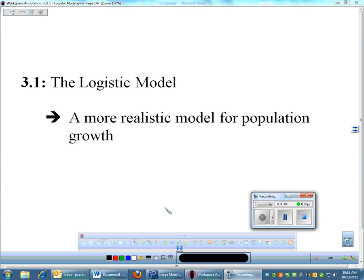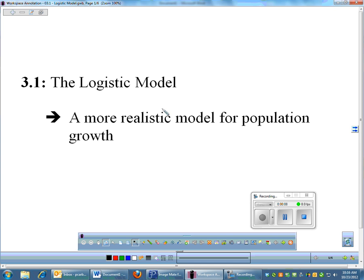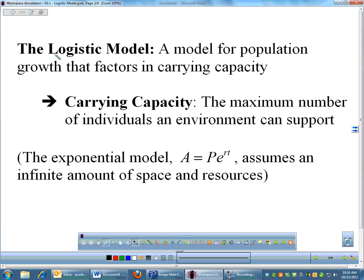All right, the last of the wordy problems we're doing in this section. This is a logistic model, which is basically just a more realistic model for population growth. The logistic model looks at the population of any organism in a community, but what makes it different is it factors in something called carrying capacity. Carrying capacity is the maximum number of individuals that an environment can support.